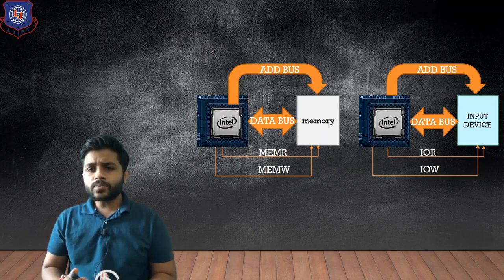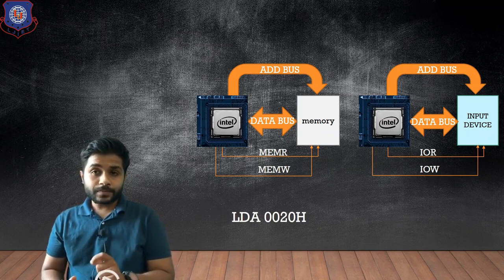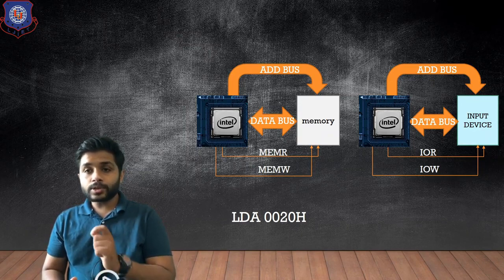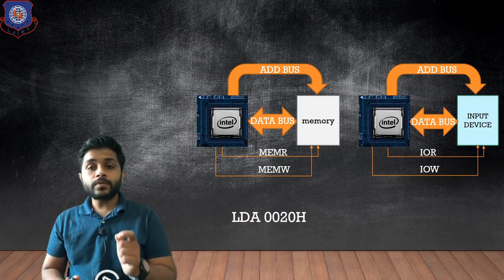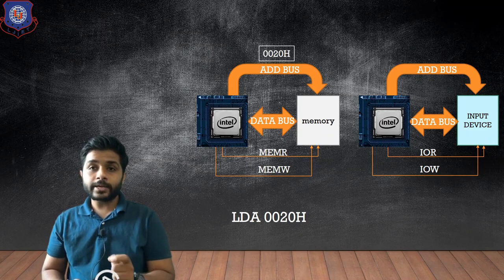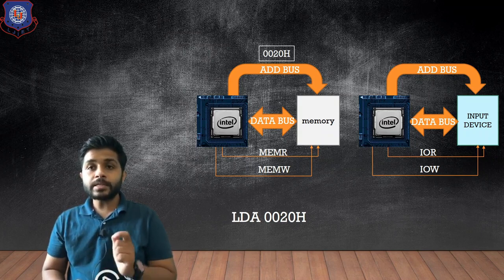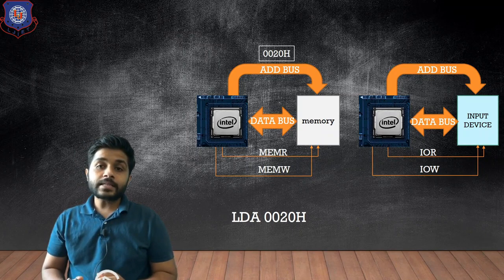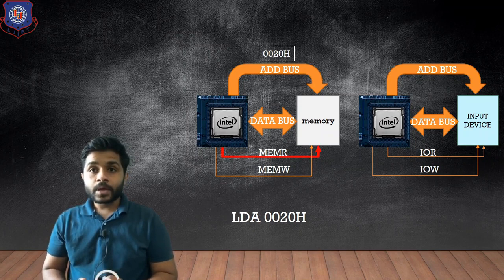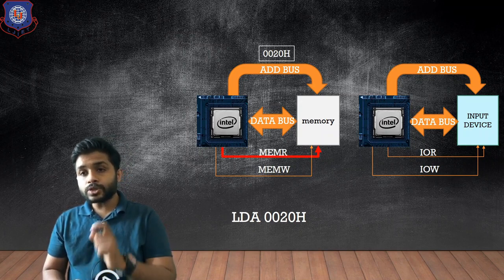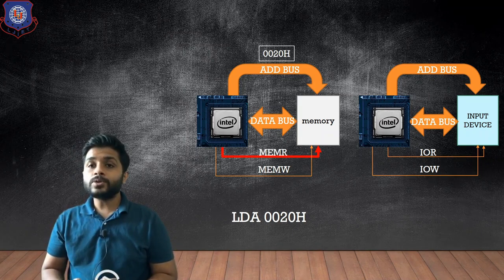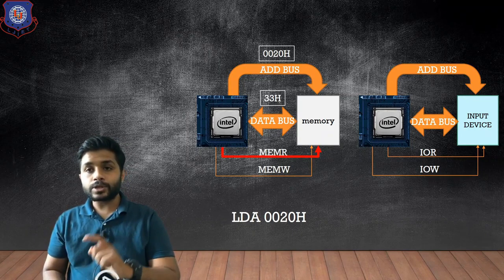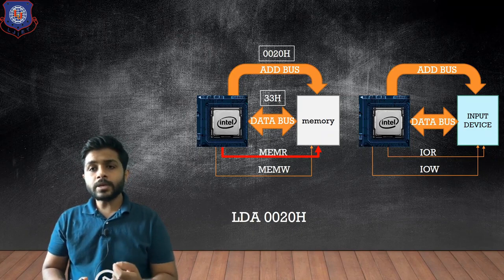Now, in the case of memory interfacing, suppose we are executing the instruction LDA 0020H. To perform this instruction, the processor will first send the address 0020H using the address bus to the memory. That particular address will be selected, and then the microprocessor will send the control signal memory read. When the memory receives the memory read signal, the data stored in the selected location will be transferred using the data bus to the microprocessor.